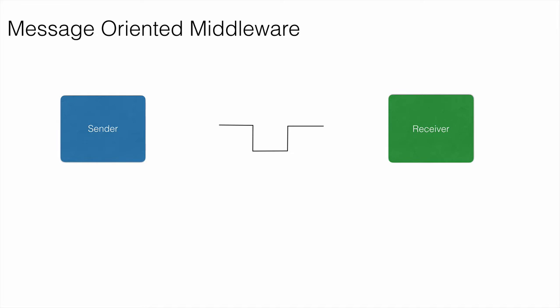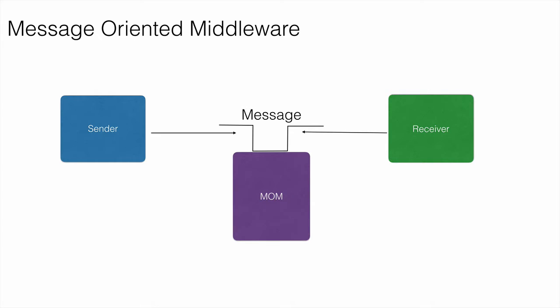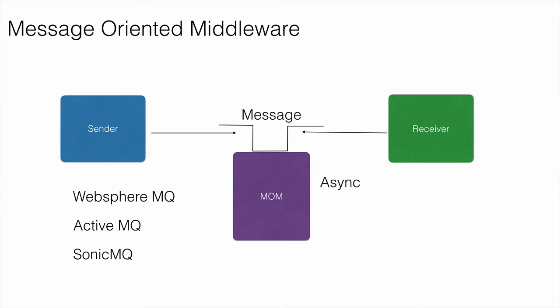What is message-oriented middleware? Message-oriented middleware is a software or hardware infrastructure that supports the sending and receiving of messages. Examples of message-oriented middlewares are WebSphere MQ, ActiveMQ, and SonicMQ. All these message-oriented middlewares allow our applications to focus on the business logic and they will take care of asynchronous processing, reliability, and even message transformation. They provide all these features inbuilt.